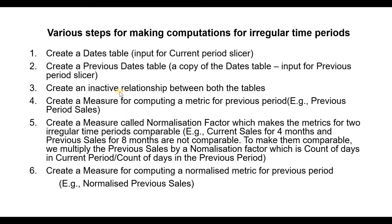Then we have to create an inactive relationship between these two tables. We are creating an inactive relationship because we don't want the previous dates table to interfere with the slicing and dicing that we do using the dates table. The inactive relationship will become active only when those measures in which this relationship is used will be invoked. The fourth step is creating a measure for computing a metric for the previous period — for example, previous period sales.